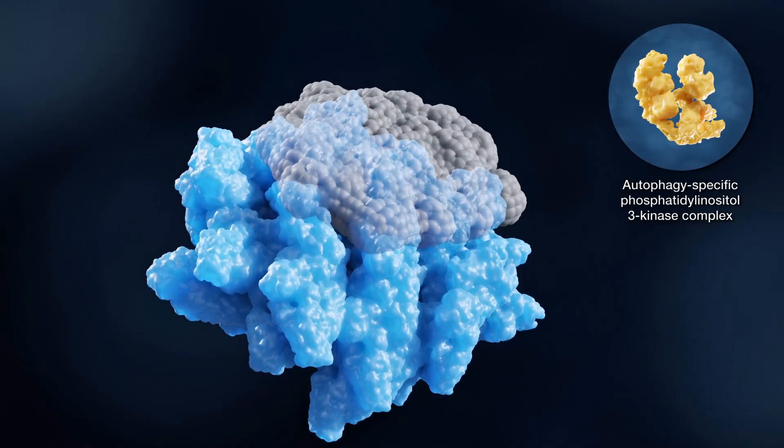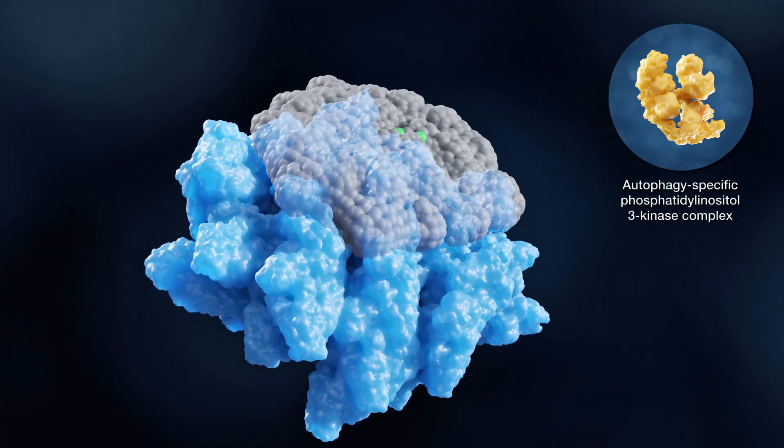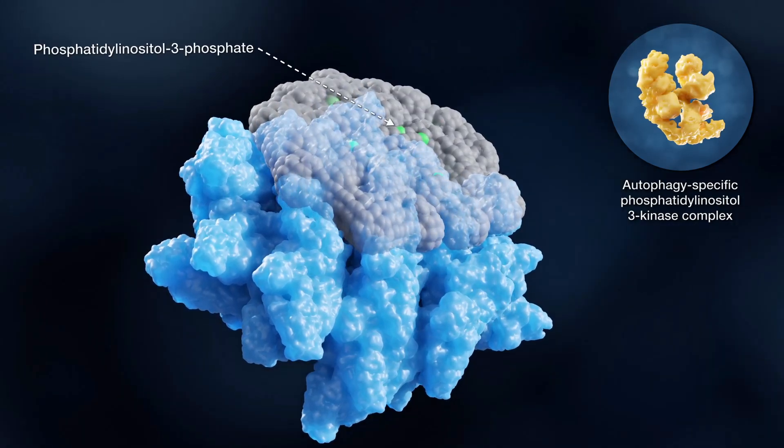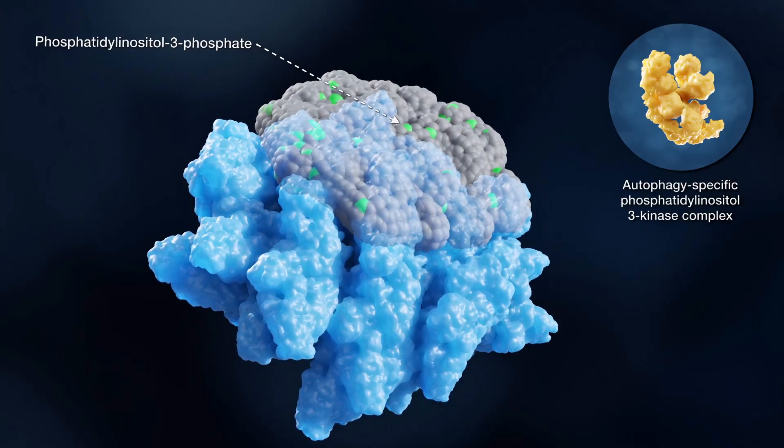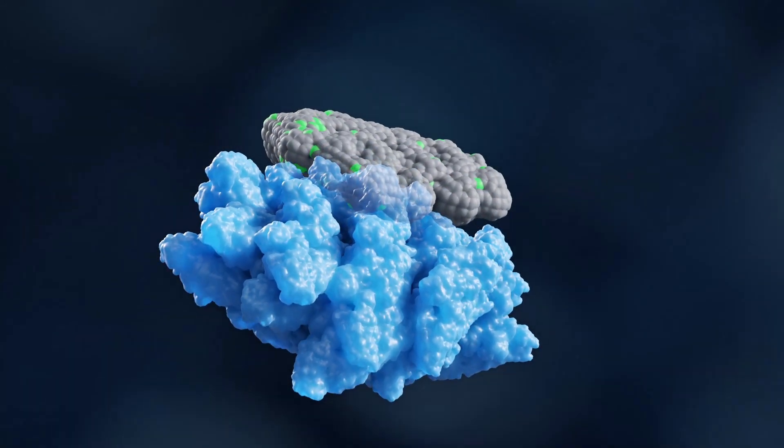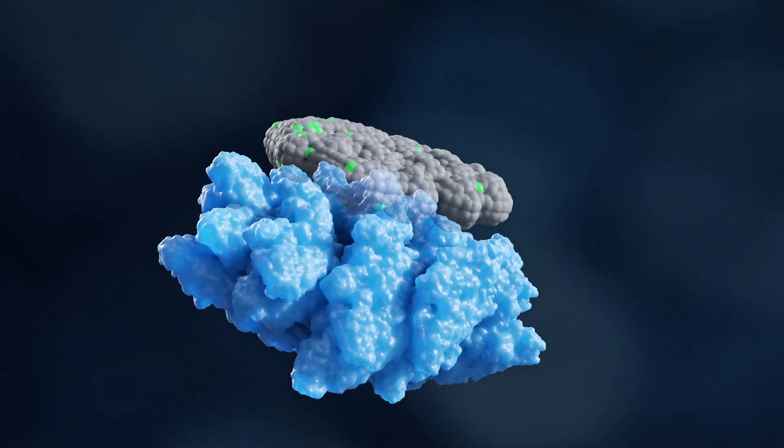The autophagy-specific phosphatidyl inositol-3 kinase complex also participates in phagophore nucleation by catalyzing the synthesis of phosphatidyl inositol-3-phosphate on nascent autophagosomal membranes. This is important for the recruitment of the components of the ATG machinery involved in phagophore expansion.